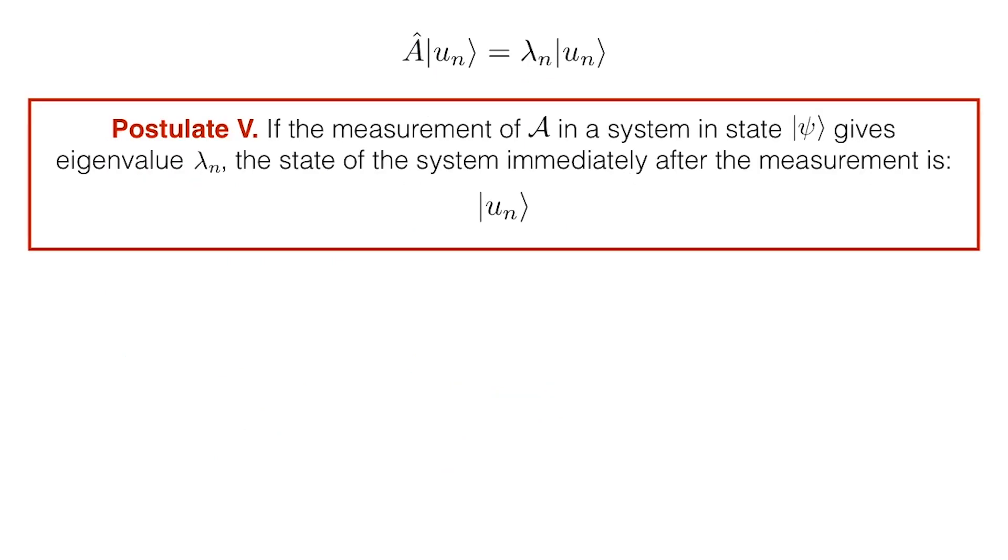Postulate 5 tells us that if we measure A-hat in a system in state psi, and we get lambda n as a result of that measurement, then the state of the system immediately after the measurement is the eigenstate u n associated with the eigenvalue lambda n that we measured.